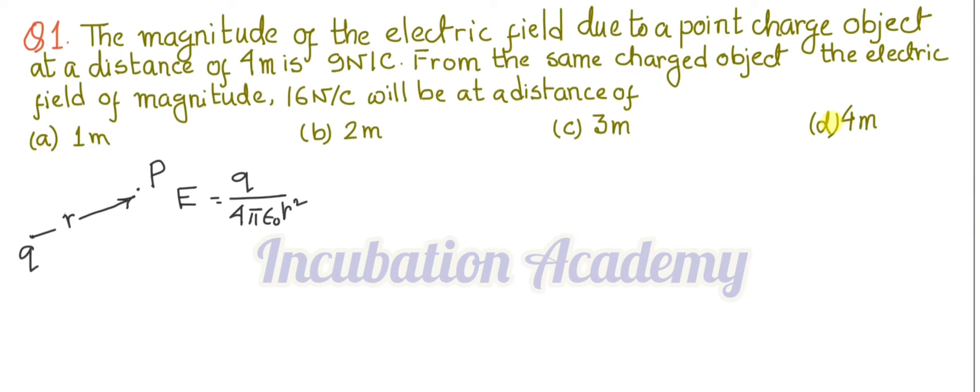In SI units, if the charge object remains the same, then the electric field depends on the distance. E is proportional to 1 divided by R square. The electric field is inversely proportional to the square of the distance from the charge.